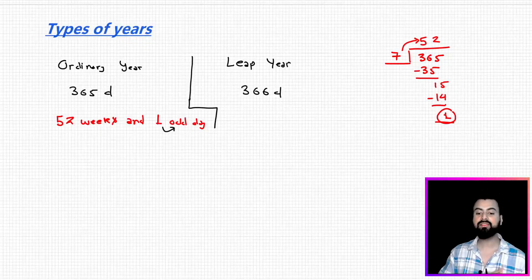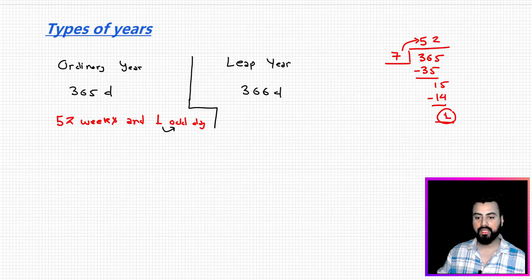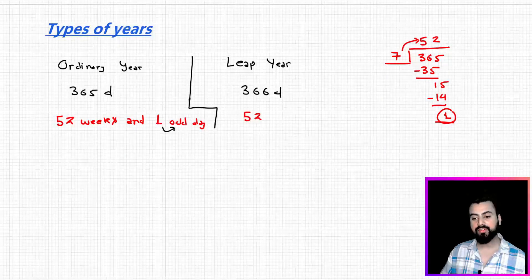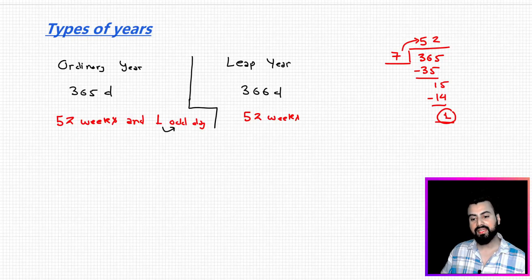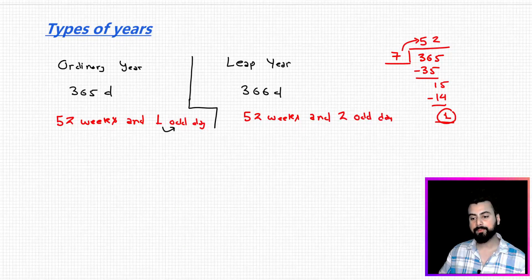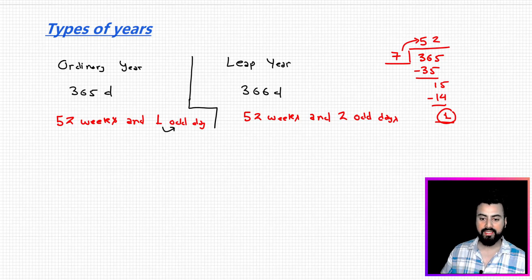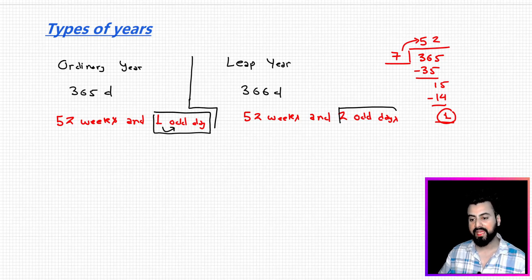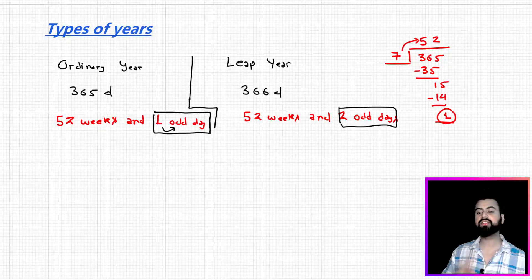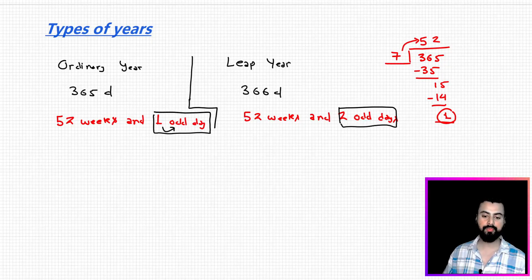Likewise, if you try converting 366 days into weeks, the number of weeks is the same but the number of extra days — or odd days — is going to be two. That's the only difference. Now these odd days are very important, very crucial for the calculation of calendar problems, as you'll realize when I discuss a few questions.